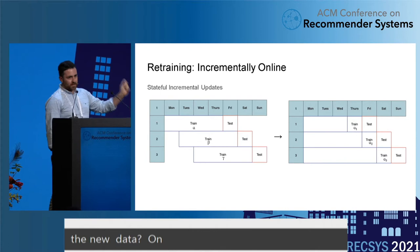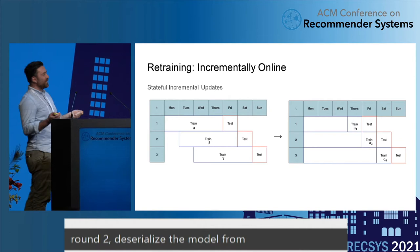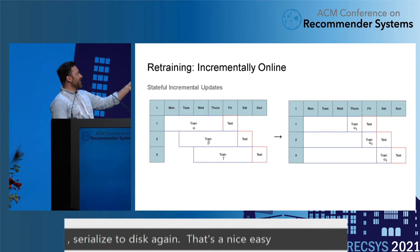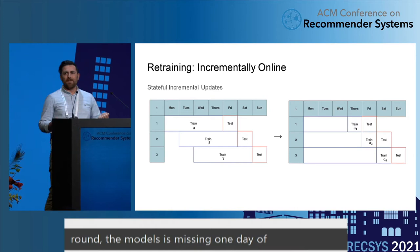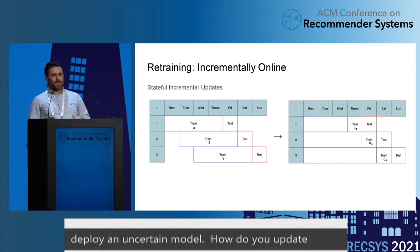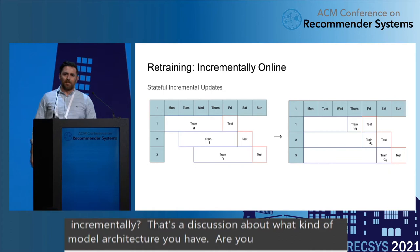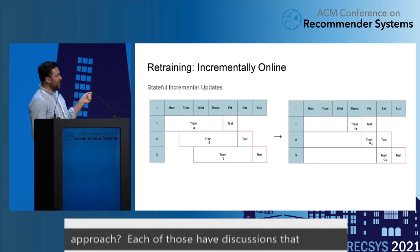This incremental approach comes with two problems. There's a lot of uncertainty: on the first round, the model has only seen one day of data, while in the old approach it's seen four days — you don't want to deploy a very uncertain model. The other problem is how do you even update incrementally? That depends on your model architecture — whether you're using a decision tree or a gradient-based approach. Each has different considerations for incremental updates, which are in the paper.